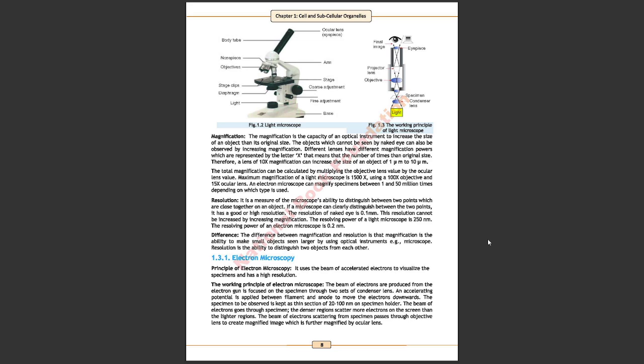Different lenses have different magnification power which are represented by letter X. That means number of times than original size. For example, a lens of 10x magnification can increase the size of object of 1 micrometer to 10 micrometer.